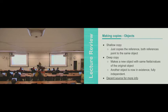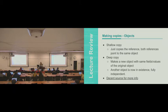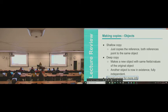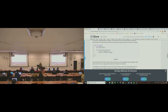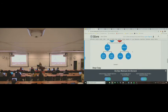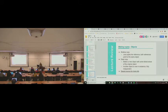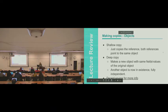Making copies: a shallow copy just copies the reference, so they're pointing to the same object - like setting my roommate's apartment to my apartment. A deep copy actually makes a new object using the new keyword with the same fields and values of the original. Another object is in existence, fully independent. Think of it as two different persons versus two references to the same person.